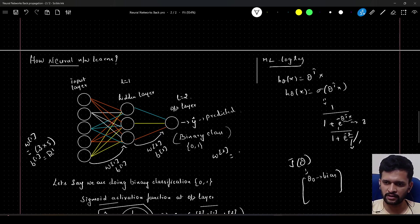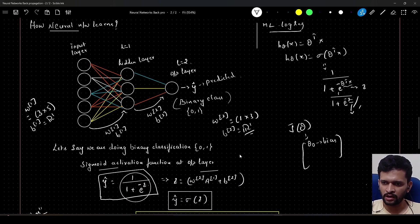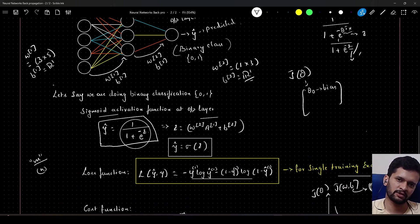What would be the shape of w2? It will be 1 by 3, and again the shape of b2 is just a single number. Now we will have so many parameters to learn.